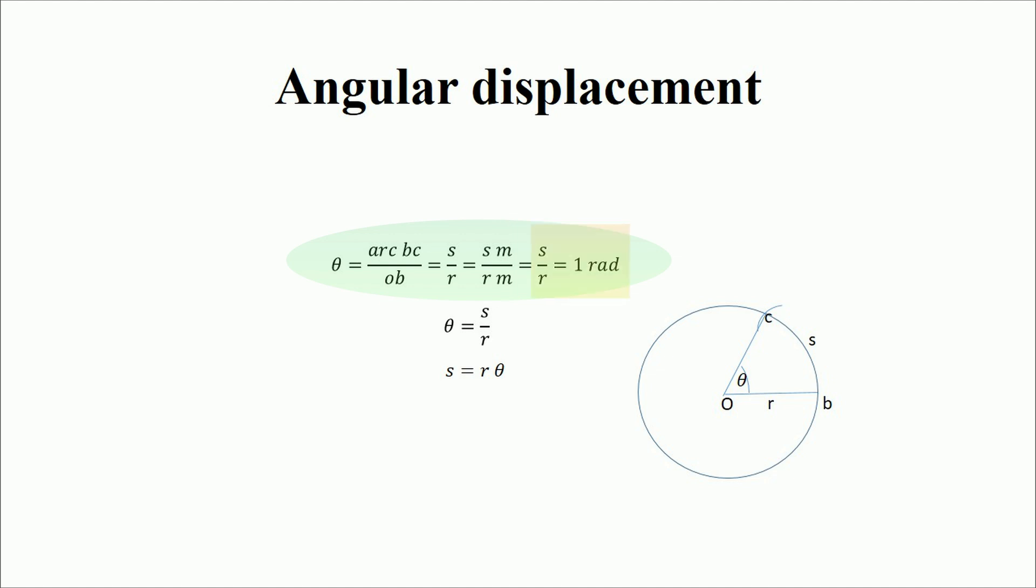This ratio of the arc length S to the radius R is measured in radians, where one radian is approximately equal to 57.296 degrees. In this context, the arc length S represents the angular displacement. By rearranging the equation to solve for S, we find S is equal to R multiply theta. This equation shows that the angular displacement S is equal to the radius R multiplied by the angle theta.